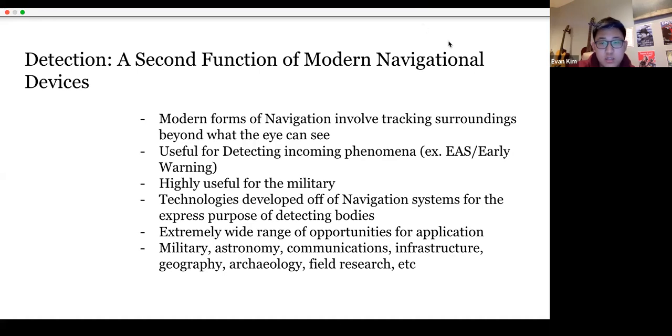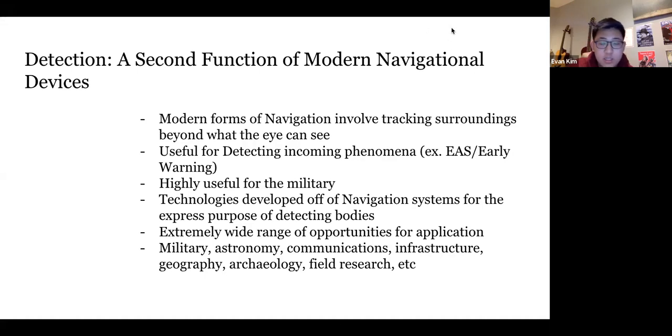Here we digress and go into what detection is. Detection is sort of this offshoot of navigation, because the same technologies that are used to navigate in the modern context, like radar, can also be used to detect incoming objects. Instead of trying to figure out what your surroundings are so you can move around them, because of the way that modern navigation works, which involves sketching the surroundings beyond what you can see with the computer, you can also use that information about what's beyond what you can see to your advantage, for example, in the military.